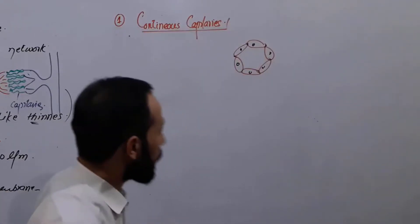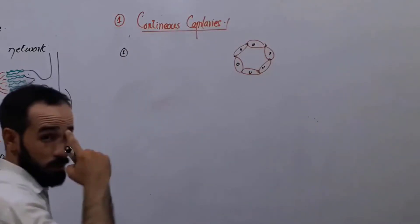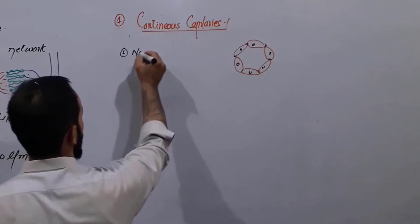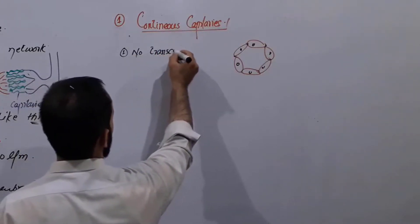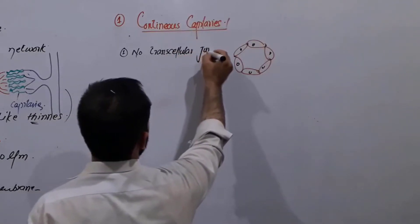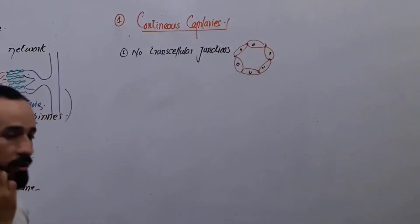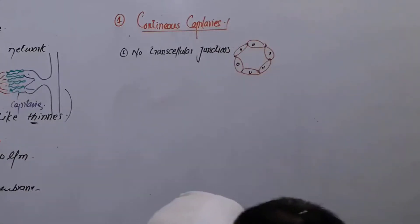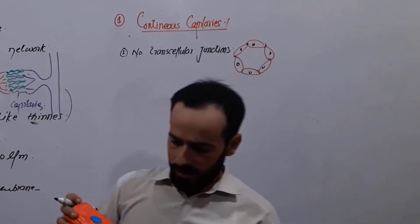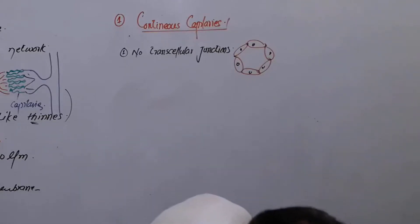What about continuous capillaries? They have no transcellular junctions. Those capillaries which have no transcellular junctions are called continuous capillaries. We will see in the sketch what is meant by transcellular junctions and other things.